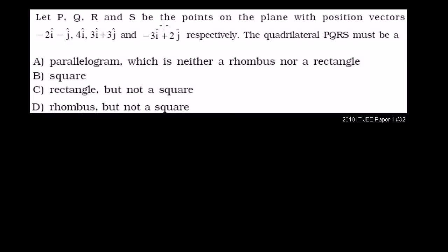Let P, Q, R, and S be the points on the plane with position vectors negative 2i minus j, 4i, 3i plus 3j, and negative 3i plus 2j, respectively.